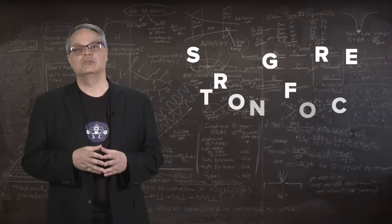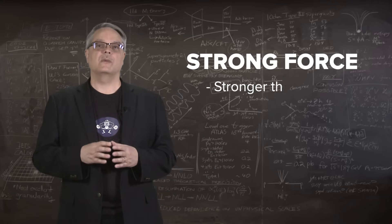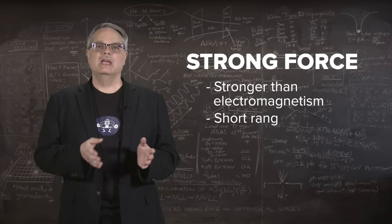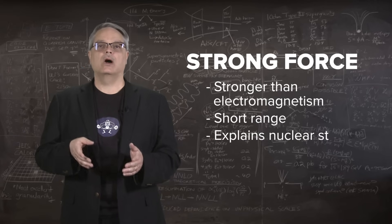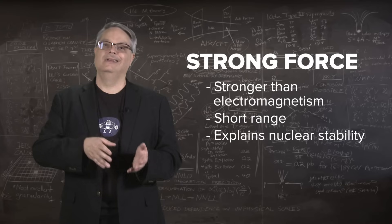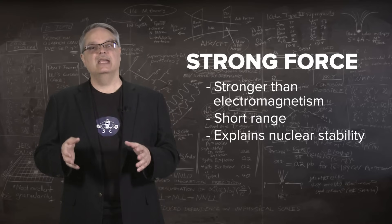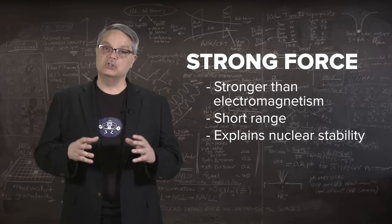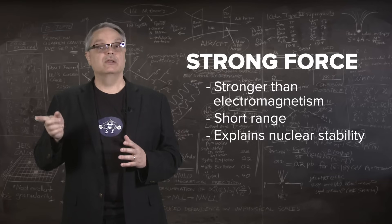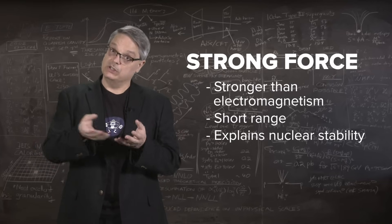So that's the strong force. It is stronger than the electromagnetic force, but it has a much shorter range. And those two properties explain why low mass nuclei are stable and heavy ones aren't. In the heavy ones, all the protons in the nucleus push against all the other protons, while the strong force only feels the force of its neighbors.